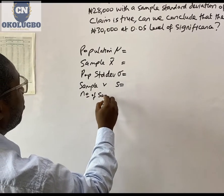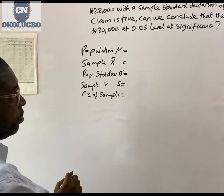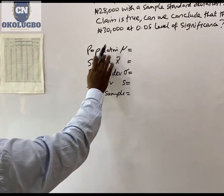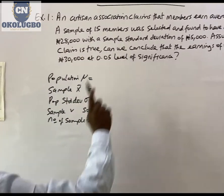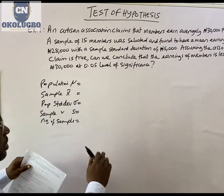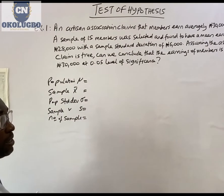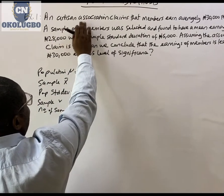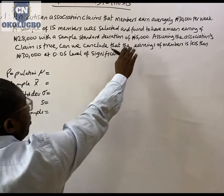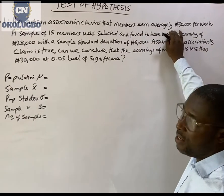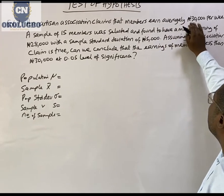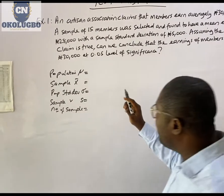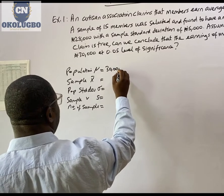Let's find out what these things are. The population mean — the first statement is the population mean, that is the claim of the members. Remember, the population is the totality of members that share similar characteristics. So the artisan association claims that members earn averagely — and average is mean — 30,000 Naira. So 30,000 becomes the population mean.